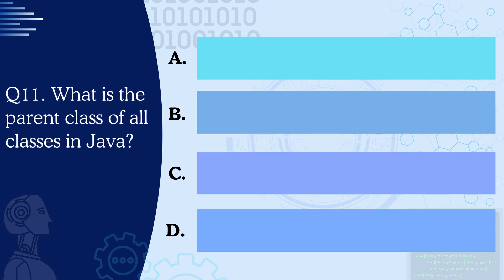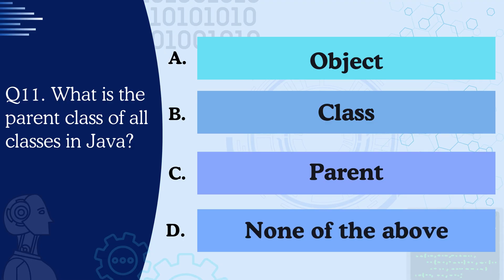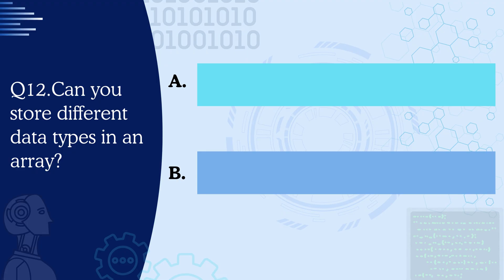Question 11: What is the parent class of all classes in Java? The correct answer is A — the Object class. Question 12: Can you store different data types in an array? The correct answer is no — in a standard way you can't. But you might create an array with the Object data type, as it will allow you to store any type of data, since Object is the parent class of all classes.